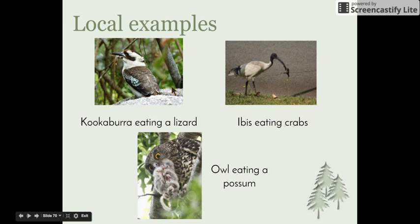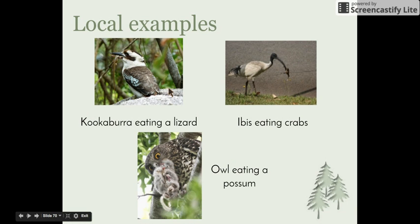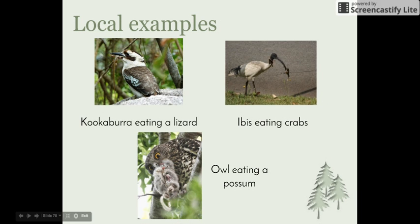A couple of local examples from the excursion: we had the powerful owl that ate the ring-tailed possums, the kookaburras that like to eat blue-tongued lizards, and the ibis that lives in the mangroves and likes to eat the crabs that live in the crab holes. We also talked about the adaptations that the ibis has for dealing with that.